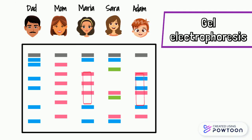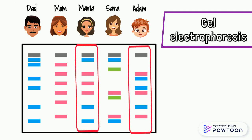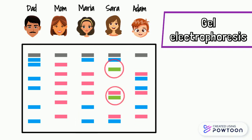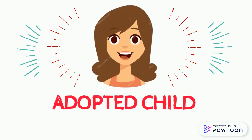Now you will notice that Maria and Adam both have half DNA from both their parents. Meanwhile, Sarah got two green-coated bands that neither matched the bands from the mother nor the father. Thus, the adopted child in the family is Sarah.